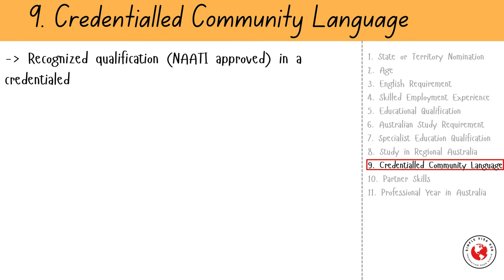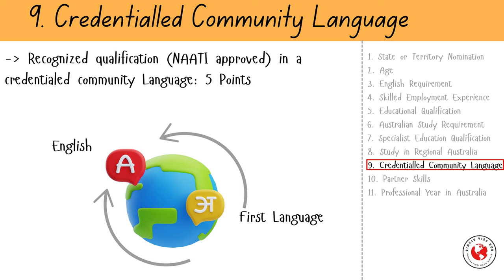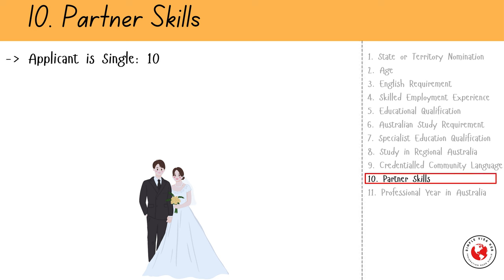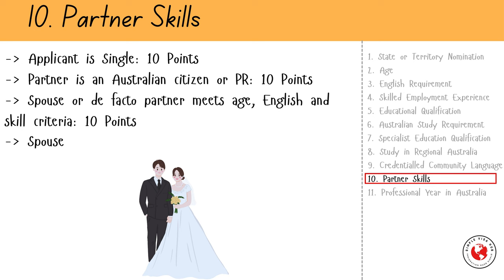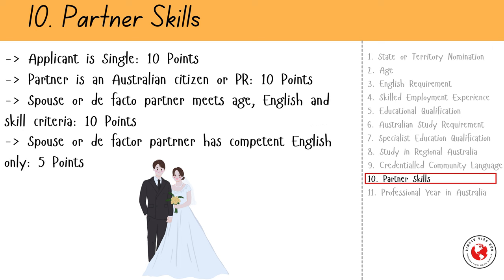The next factor is accredited community language. This can add another 5 points if you can get a NAATI-approved accredited qualification — meaning if you can pass a translation test from your first language to English, you can claim 5 points towards your EOI. The next factor is partner skills. If you are single, you can get 10 points, and the same points are given if you have an Australian citizen or permanent resident partner. If your partner has competent English and a positive skills assessment on the same list as you, you can get 10 points. If your partner has only competent English but no relevant skills assessment, you can get 5 points. In any other circumstances, you will not be given any partner points for the skilled migration program.